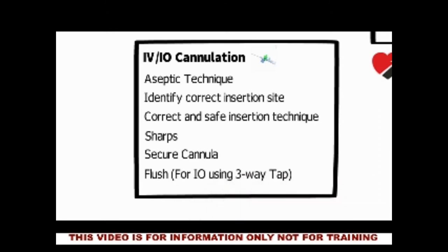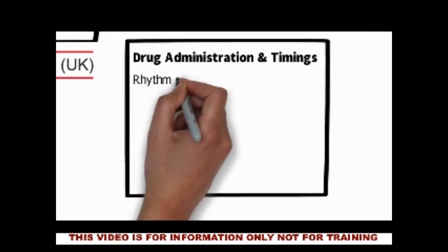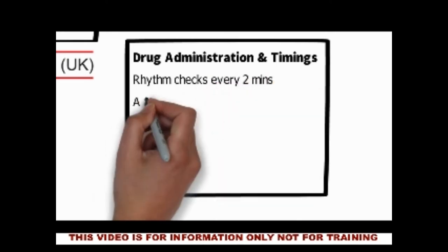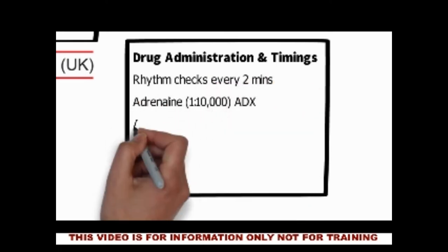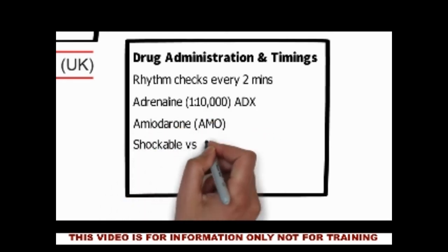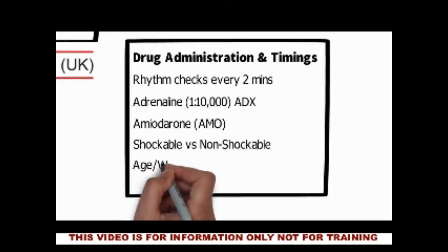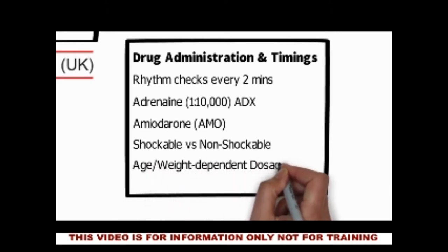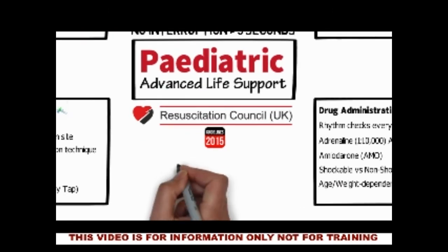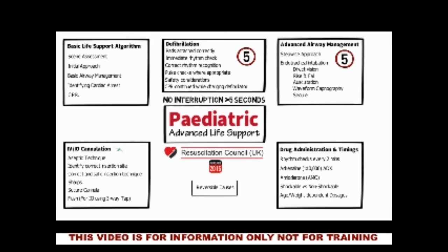Once we have gained IV access we consider drug administration and timings. General principles are the same as adult ALS with variations in dosages. Key points are rhythm checks every 2 minutes, administration of adrenaline 1 in 10,000 and amiodarone — timing dependent on whether the patient is in a shockable or non-shockable rhythm. Dosages are age or weight dependent. Once considered, similar to adult ALS we can start to think about reversible causes.